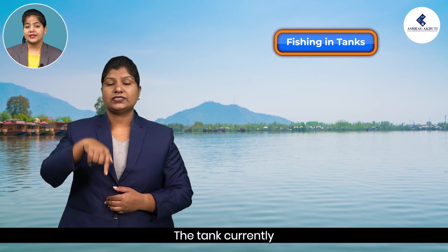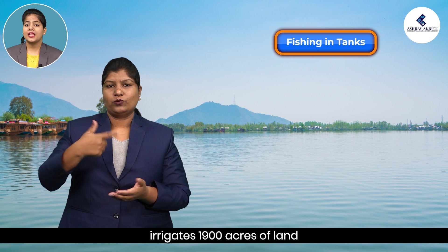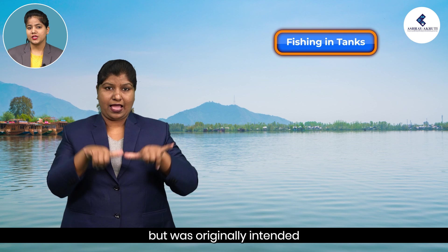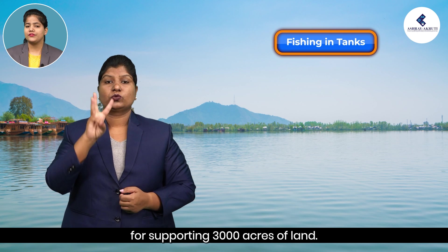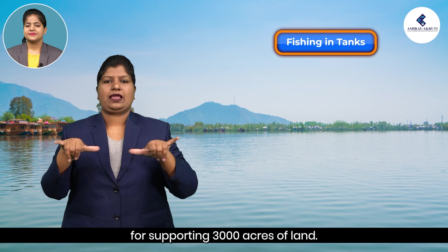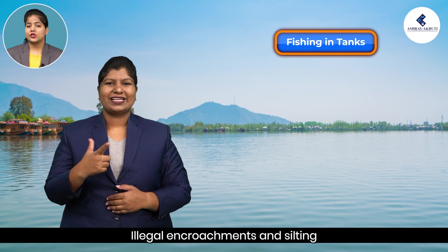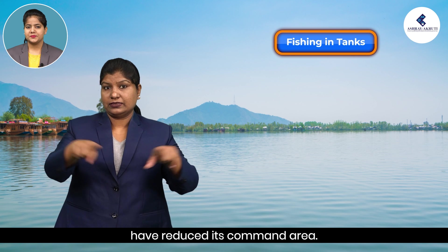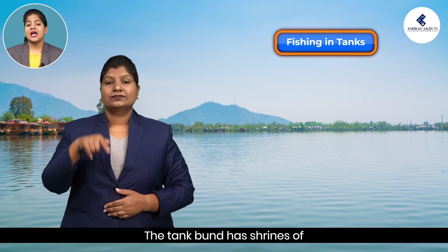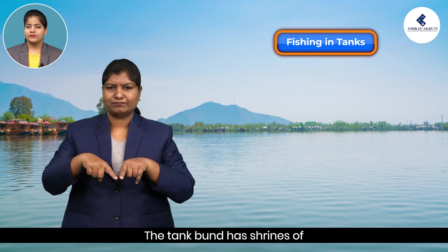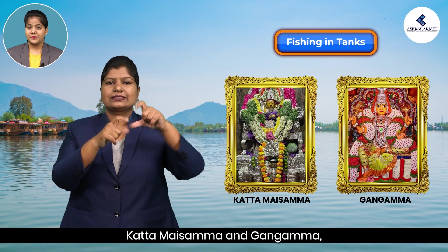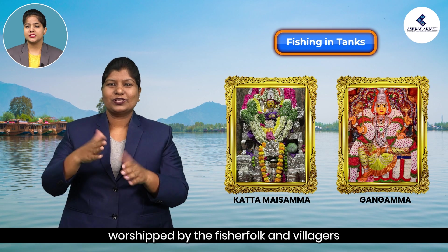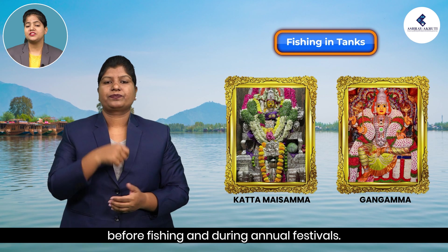The tank currently irrigates 1,900 acres of land but was originally intended to support 3,000 acres. Illegal encroachments and silting have reduced its command area. The tank bund has shrines of Kattamaisamma and Gangamma, worshipped by the fisher folk and villagers before fishing and during annual festivals.